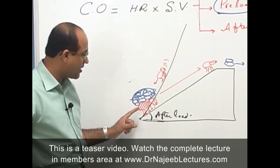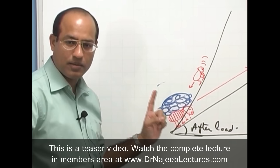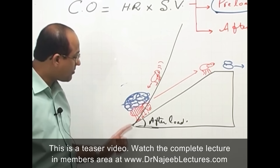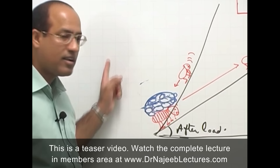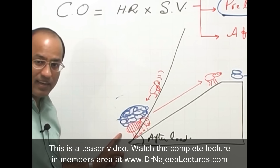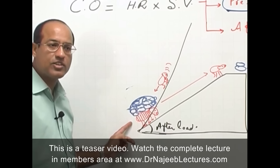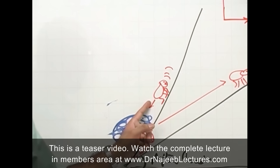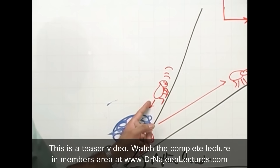Three factors can fail the heart. Number one: the donkey is not intrinsically healthy — a diseased myocardium cannot pump well. Number two: if you increase preload too much, the ventricle may not perform well. Number three: if you increase total peripheral resistance — afterload — pathologically high, the ventricle cannot work well. If you increase the slope too much, the donkey cannot perform, and similarly, excessive afterload leads to cardiac failure.